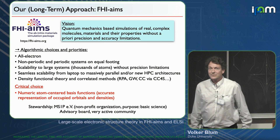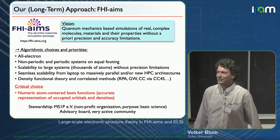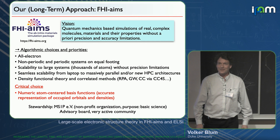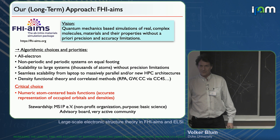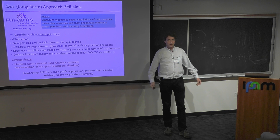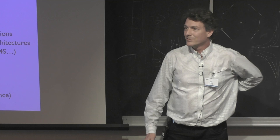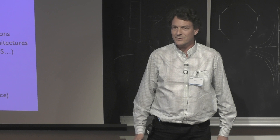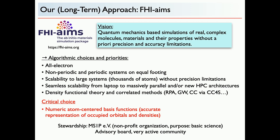FHI-aims is a long-term project. I finished my PhD in Erlangen, Germany on metal alloys, then moved to Boulder, Colorado. I learned that in Berlin there was an idea to start a new electronic structure code to solve a few problems: we had different tools for periodic and non-periodic systems, plane wave codes are apparently periodic, and we wanted to get rid of pseudopotentials. If the all-electron method is actually affordable, you can use it, and we wanted something that would scale to large systems.